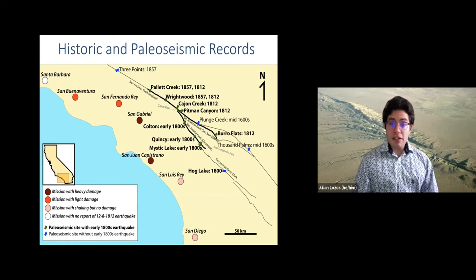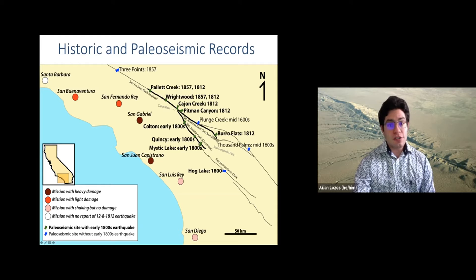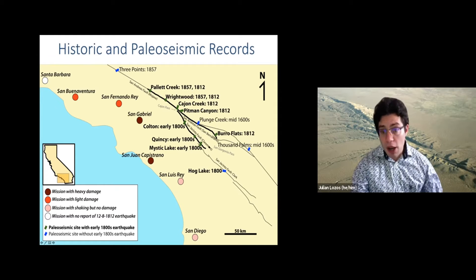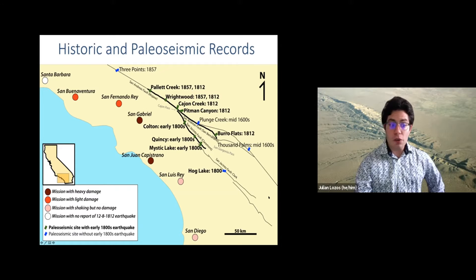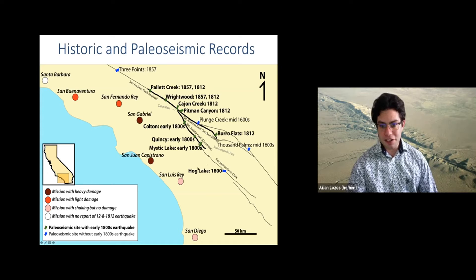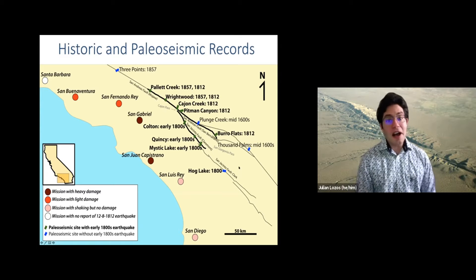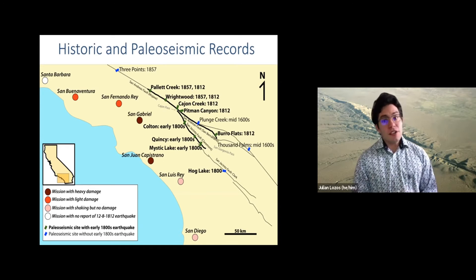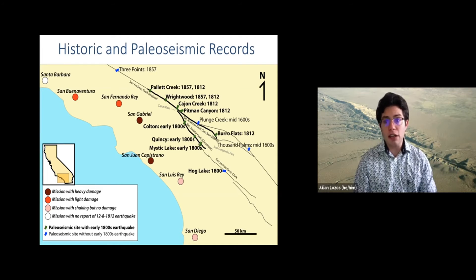Sure enough, people have identified an early 1800s paleoseismic event on actually three strands: the Mojave and San Bernardino sections of the San Andreas, the Claremont section of the San Jacinto fault — which is separated by a 1.2 kilometer step-over from the San Andreas — and then the Clark strand of the San Jacinto fault, which is a four kilometer step-over away from the Claremont. So all three of these fault strands have significant evidence of a significant rupture in the early 1800s.